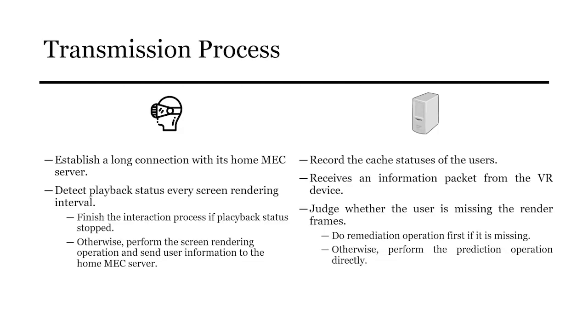When the user starts watching the video, the VR device establishes a connection with its Home MEC server, and detects the concurrent playback status of every screen rendering interval. If the VR playback is finished, the interaction process ends and the VR device disconnects from its Home MEC server. Otherwise, the VR device performs the screen rendering operation and simultaneously sends the user's information to its Home MEC server. The Home MEC server will render the cached status of the users within its service areas. When the MEC server receives an information packet from a VR device, it can judge whether the user is missing the render frames based on the FOV. It performs the remediation operation first if it is missing. Otherwise, it performs the prediction operation directly.